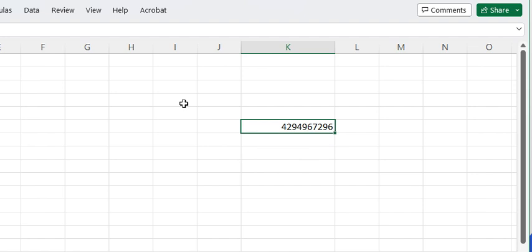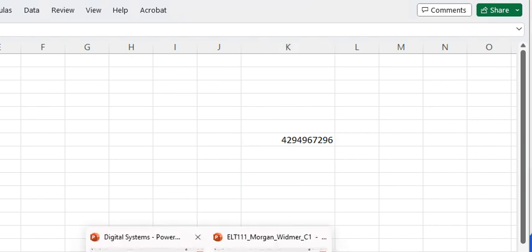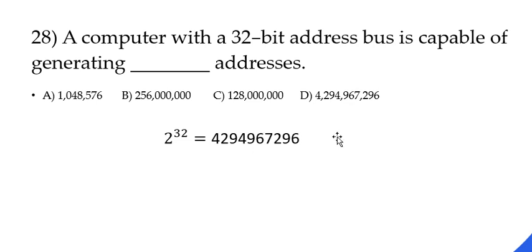All I do is I go to 2 to the power 32, and then I'm going to be counting that number. So this is what I get from my calculation. I'll go back here and I'm going to try to find what I got.